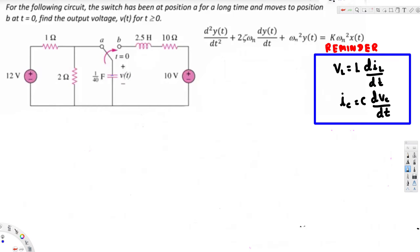The first thing is we have to write our initial conditions. Initially this switch has been at position A for a long time, which means this capacitor will be fully charged and will be treated as open. So if the capacitor is open, then the voltage across the capacitor at the initial state is going to be the voltage across the 2 ohm resistor, because these two are in parallel with each other.